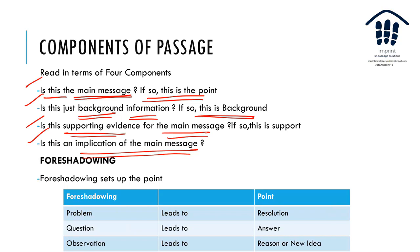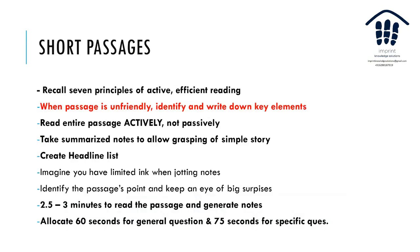Foreshadowing can also help. Think of a passage as: what is the problem and what is the resolution? What is the question and what leads to the answer? What is the observation and what new idea does it lead to? Passages are normally set up this way — they'll mention a problem and give a resolution, give a question and answer, give an observation with reasons, and maybe even challenge whether a reason is correct.